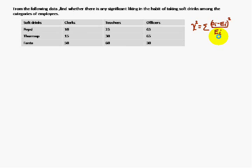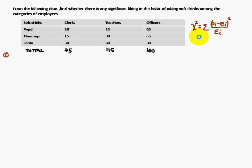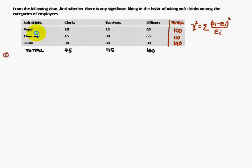What is given are the observable frequencies. We have to find out the expected frequency as well. Before that, we have to find the totals class-wise — teachers, offices — and soft drink wise, that is Pepsi, Thumbs Up, and Fanta — and the grand total, which is 350.